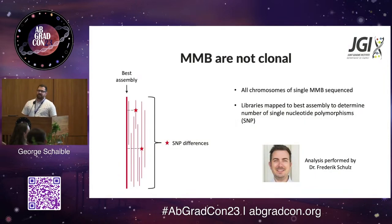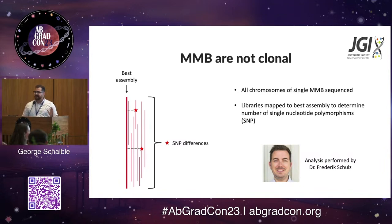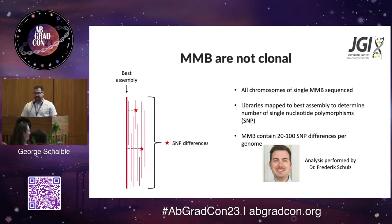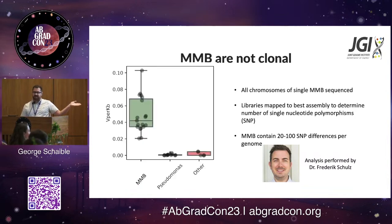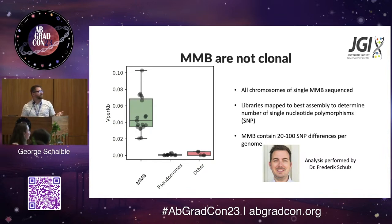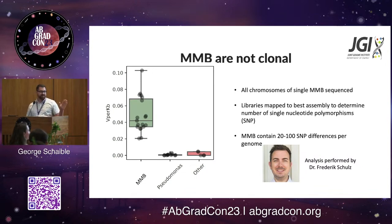One of the things we found was that these MMB are not actually clonal. We did this by sorting whole consortia, performing multiple displacement amplification to amplify their entire genome, sequencing that, and mapping reads to the best assembly to look at single nucleotide polymorphism differences. We found they have a much higher SNP rate compared to controls — a Pseudomonas control and other environmental consortia — which was a surprise and we're still scratching our heads about it.